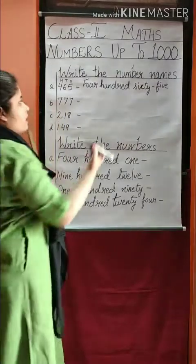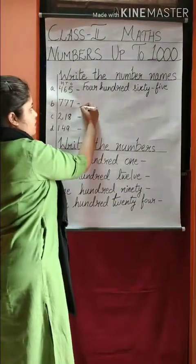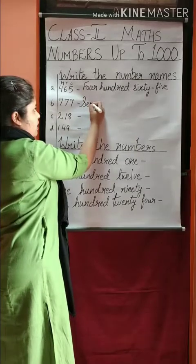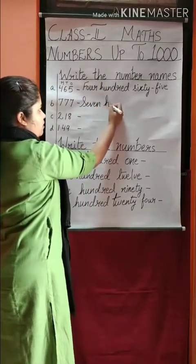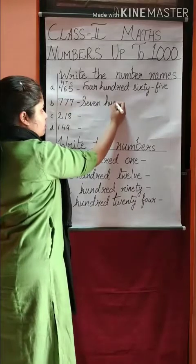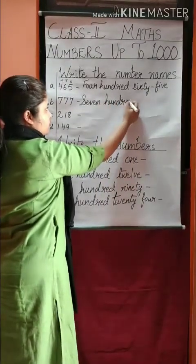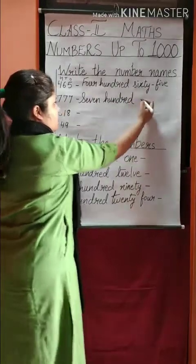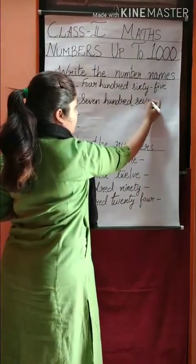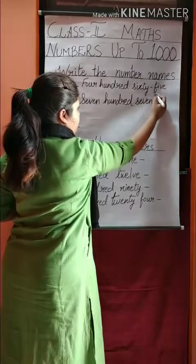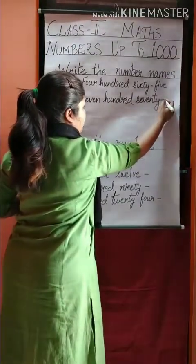Now the next number: 7 is in the 100's place, 7 in the 10's place, and 7 in the 1's place. So we write seven hundred seventy-seven.